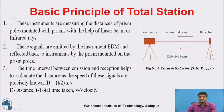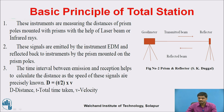The basic principles of Total Station — basically three principles are present. This is nothing but your geode meter, that is your instrument. It transmits rays; a reflector is present as the object, and the beam is reflected back. These instruments measure the distances of prism poles — that is the reflector — with the help of laser beam or infrared rays. These signals are emitted by the electronic distance meter and reflected back by a prism mounted on the prism poles. Third, the time interval between emission and reception helps calculate the speed of signals. Distance D = (T/2) × V, where T is total time taken and V is velocity.